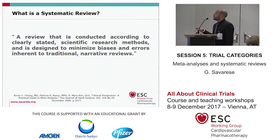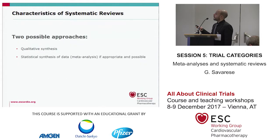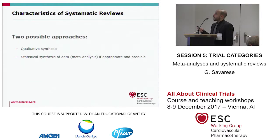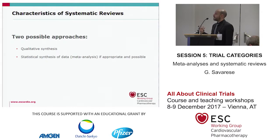So this is the definition of a systematic review. A systematic review is conducted according to clearly stated scientific research methods, and it's designed to minimize biases and errors inherent to traditional narrative reviews. It's possible to have two approaches: one is a qualitative synthesis of studies available on one topic, which is a systematic review, and another is to perform an analytic analysis of what is published about one topic, which is a meta-analysis.